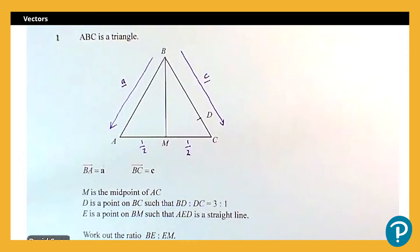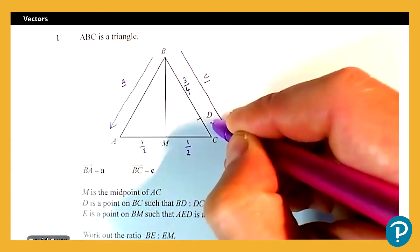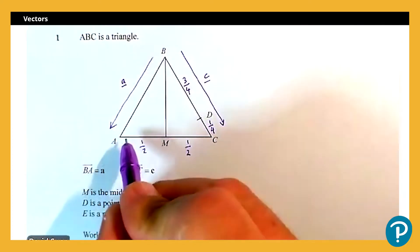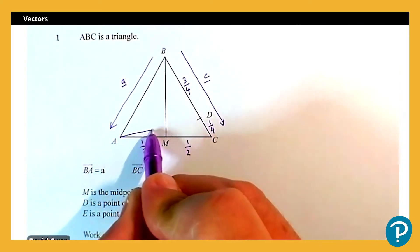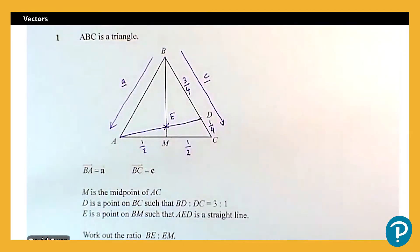D is a point on BC such that the ratio BD to DC is 3 to 1, so that chunk is three quarters and that chunk is one quarter. It always helps to put as much information as possible on the diagram. E is a point on BM such that AED is a straight line, so if I draw AD in, and we're asked to work out the ratio BE to EM.